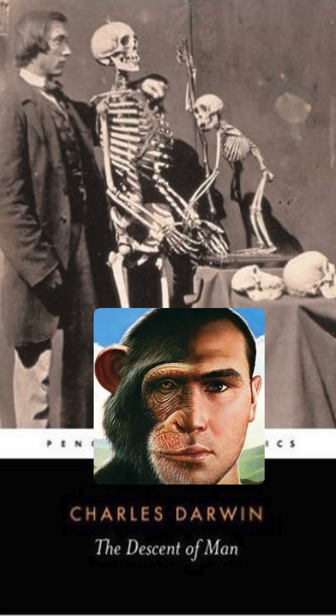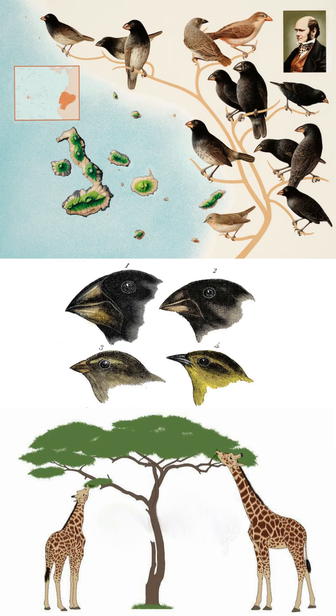In 1871, Darwin published The Descent of Man, in which he applied his evolutionary theory to human evolution, suggesting that humans and apes share a common ancestor. Darwin's theory of natural selection provided a mechanism for evolution, explaining how species adapt and change over time based on environmental pressures.